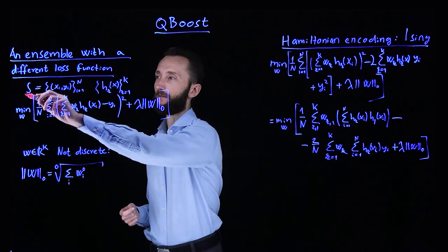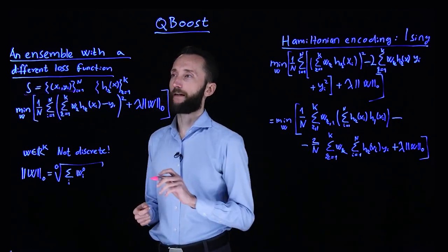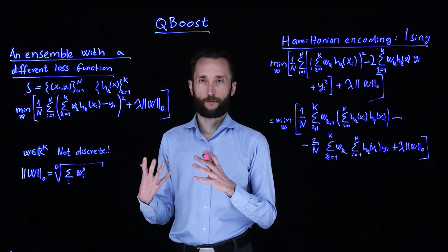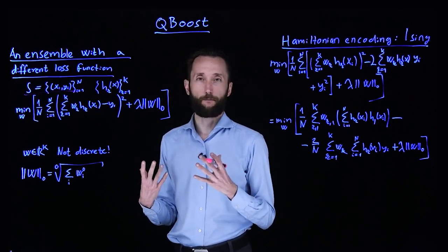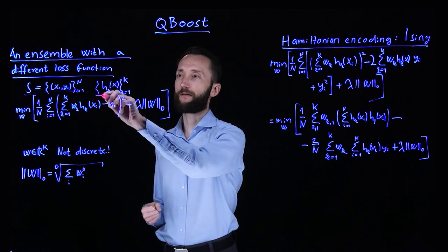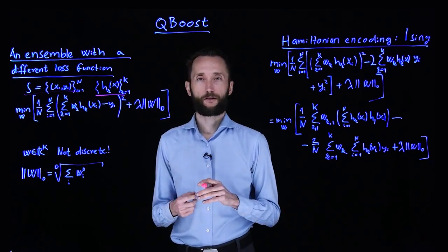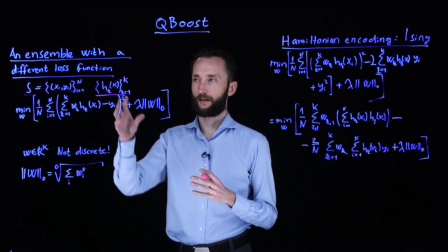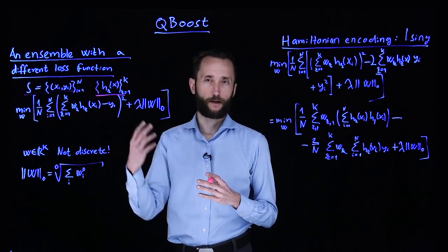So we are given a sample of data points. The points themselves lie in some high dimensional space and they come with binary labels in this case. And then we are also given a couple of models which were already learned. So you can think about it, for instance, as large neural networks.